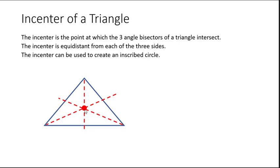This incenter can be used to create an inscribed circle — a circle that is inside the triangle and touches each of the sides at exactly one point. You get your compass, put it right here at the incenter, and then create a circle that touches exactly one point on each side. You may need to experiment a little and adjust the compass to get the exact length you need. If you do it correctly, you'll get a circle like this — and that's how you use the incenter to create an inscribed circle.